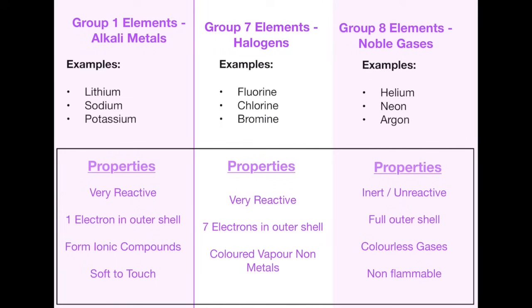The group 7 elements are known as the halogens and these are fluorine, chlorine and bromine, just to name three of them. Again the properties, they are very reactive. They have seven electrons in the outer shell because they're in group 7, and they are non-metals with a coloured vapour.